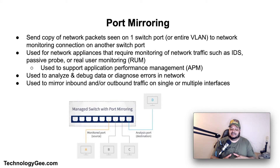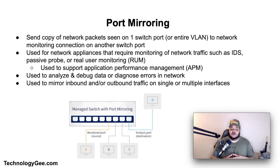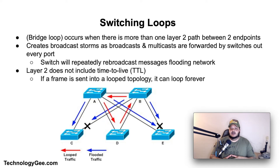Port mirroring is used on a network switch to send a copy of network packets seen on one switch port, or an entire VLAN, to a network monitoring connection or another switch port. This is commonly used for network applications that require monitoring of network traffic, such as intrusion detection systems, passive probes, or real user monitoring technology used to support application performance management. Network engineers or administrators use port mirroring to analyze and debug data or diagnose errors on a network. It can be used to mirror either inbound or outbound traffic, or both, on single or multiple interfaces.